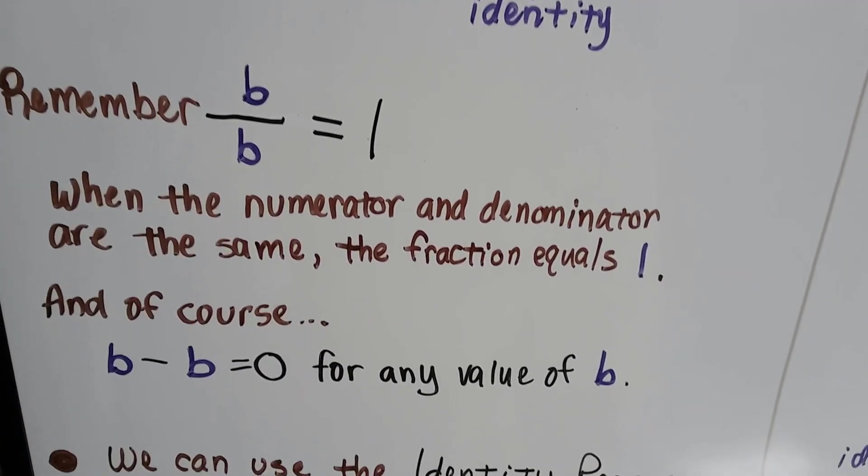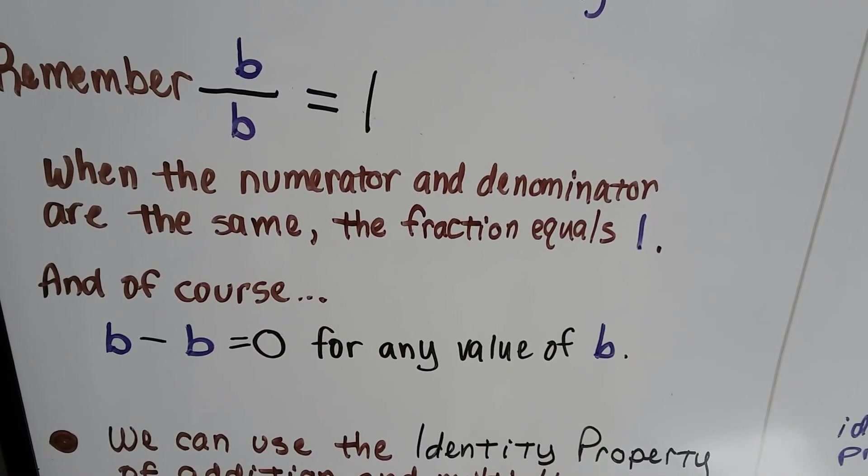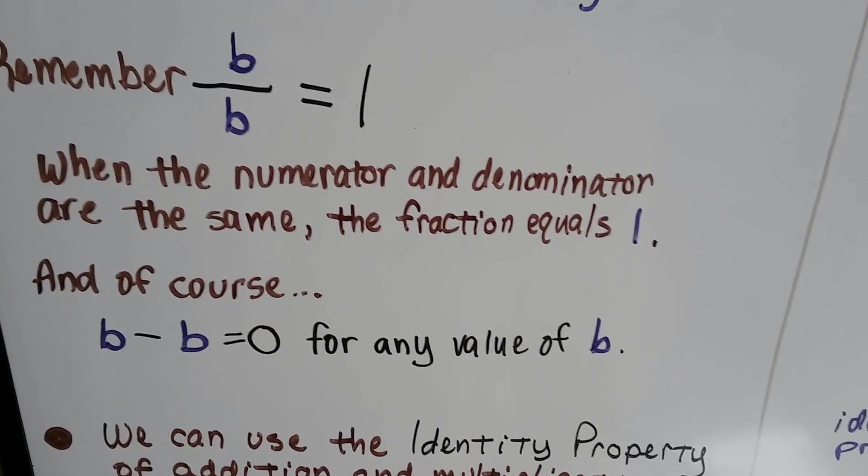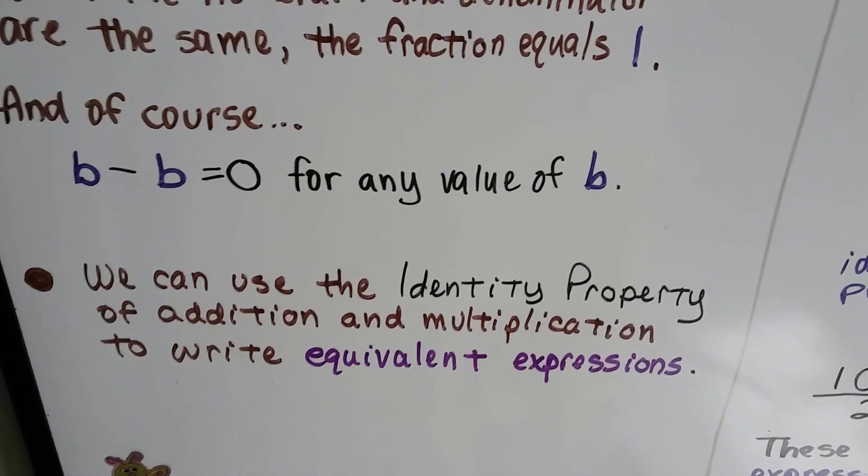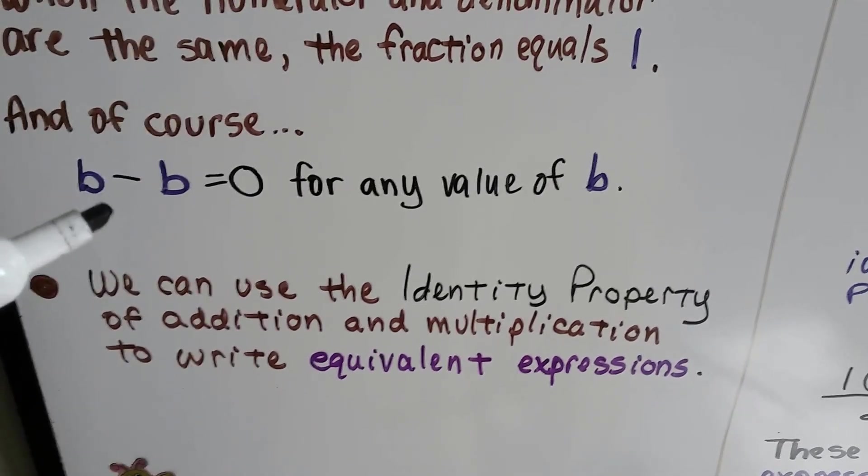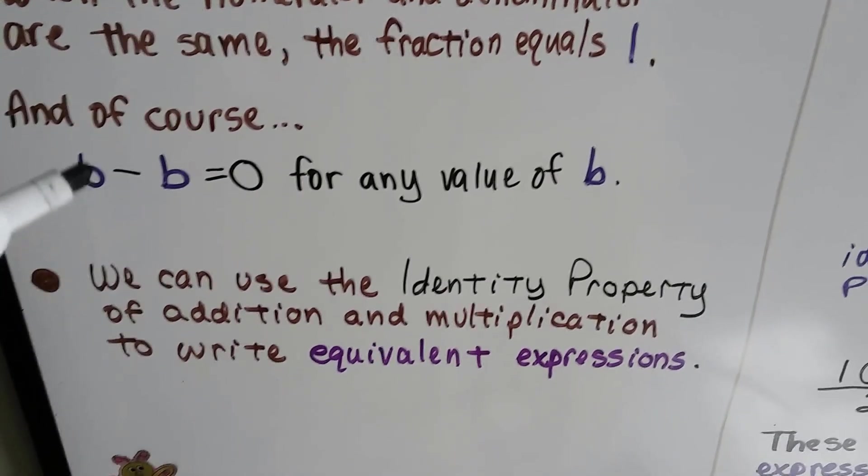Remember that when we have b over b, or any number over an identical number, it's going to equal 1. When the numerator and denominator are the same, the fraction equals 1. And of course, if we do subtraction for any value of b, b minus b equals 0 when we take it away from itself.